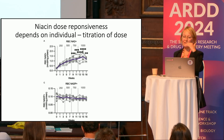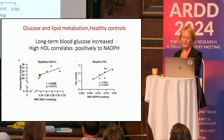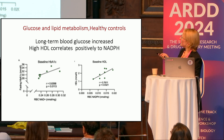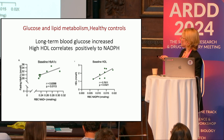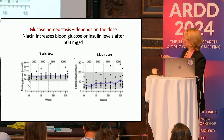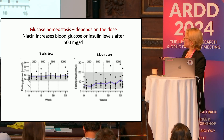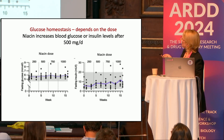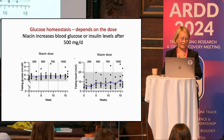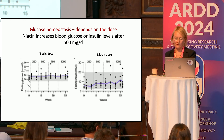Regarding glucose and lipid metabolism: niacin is known to be associated with glucose metabolic changes. HbA1C trends upward. The baseline HDL correlates with NADPH, and the red blood NAD also correlates. Is the glucose effect dose-dependent? Yes. Looking at the niacin dose increasing up to 1,000 mg, fasting glucose and insulin start to increase around the dose of 500 mg and slowly go up. So 500 mg is still fine for glucose metabolism.